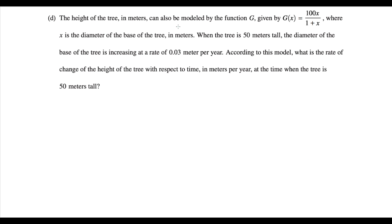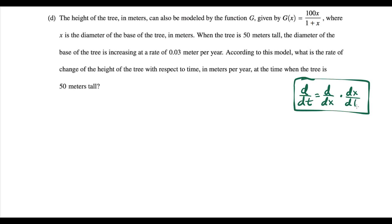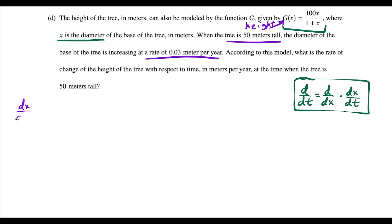For part D — related rates — you have to read carefully. You need to know the chain rule: when taking the derivative with respect to time of a function of x, that equals the derivative with respect to x multiplied by dx/dt. We have g of x where x is the diameter of the base of the tree. We're told the diameter is increasing at a rate of 0.03 meters per year, so dx/dt equals 0.03. We want to find dg/dt — the rate of change of the height.